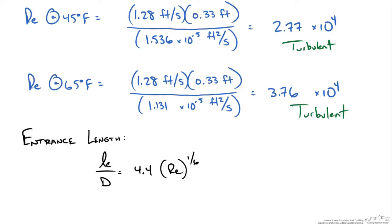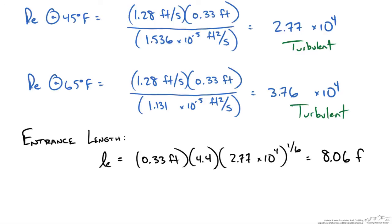If we set this up for our first flow at 45°F, we get an entrance length of 8.06 feet. So it would take 8.06 feet of pipe to reach fully developed flow.